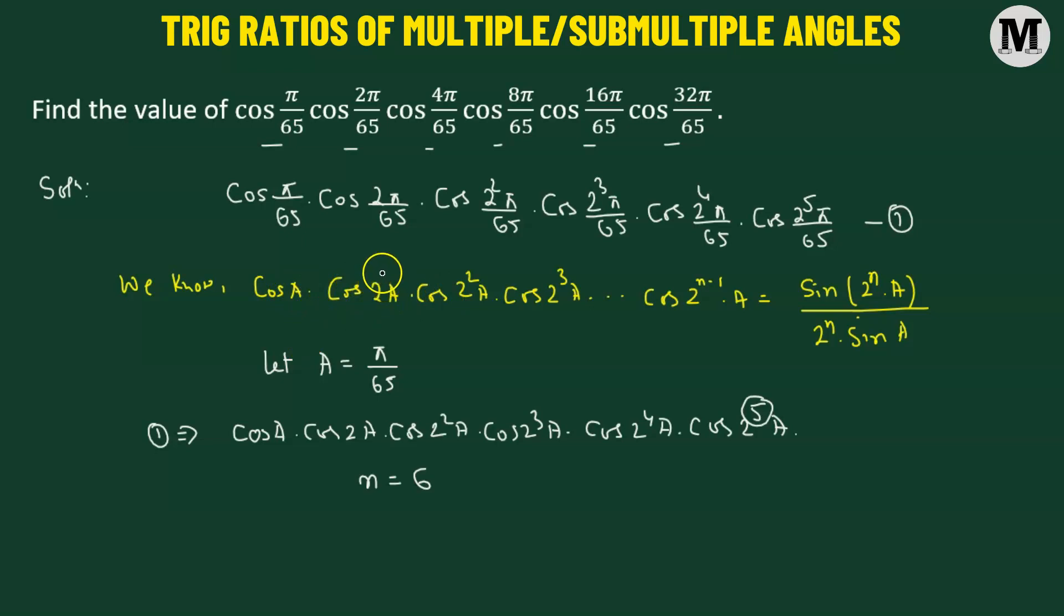The logic behind this is we have 2 raised to the power of 1 times A, and this is actually 2 raised to the power of 0. So here we start from 2 raised to the power of 0 to 2 raised to the power of N minus 1. So we have in total of N terms.